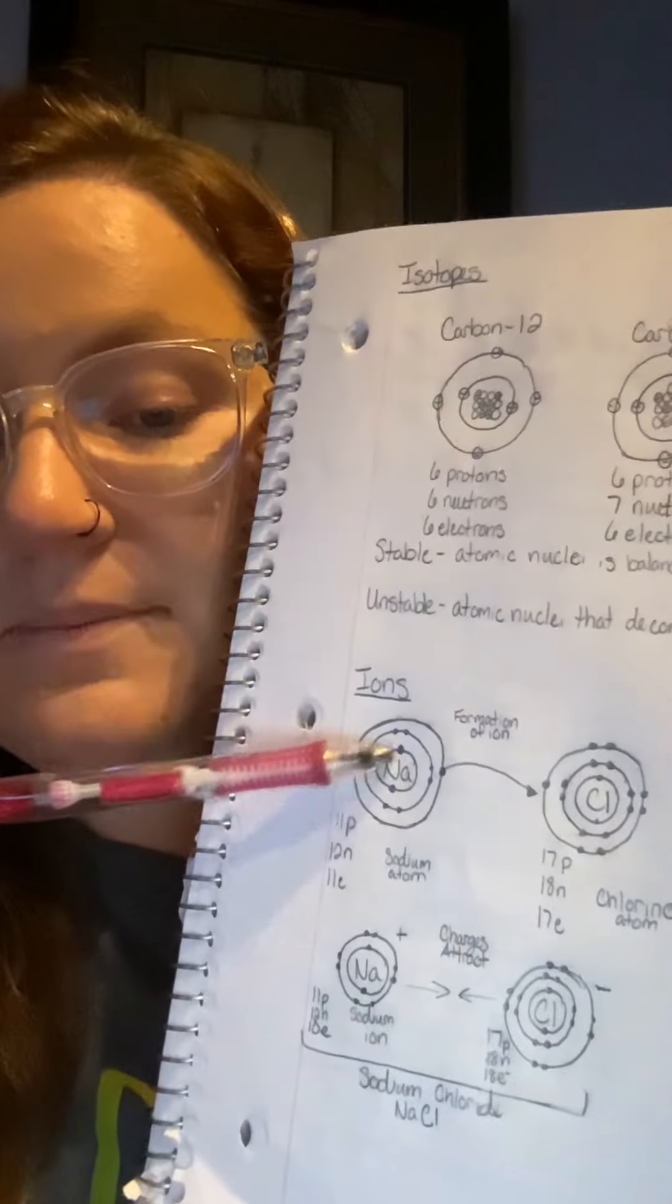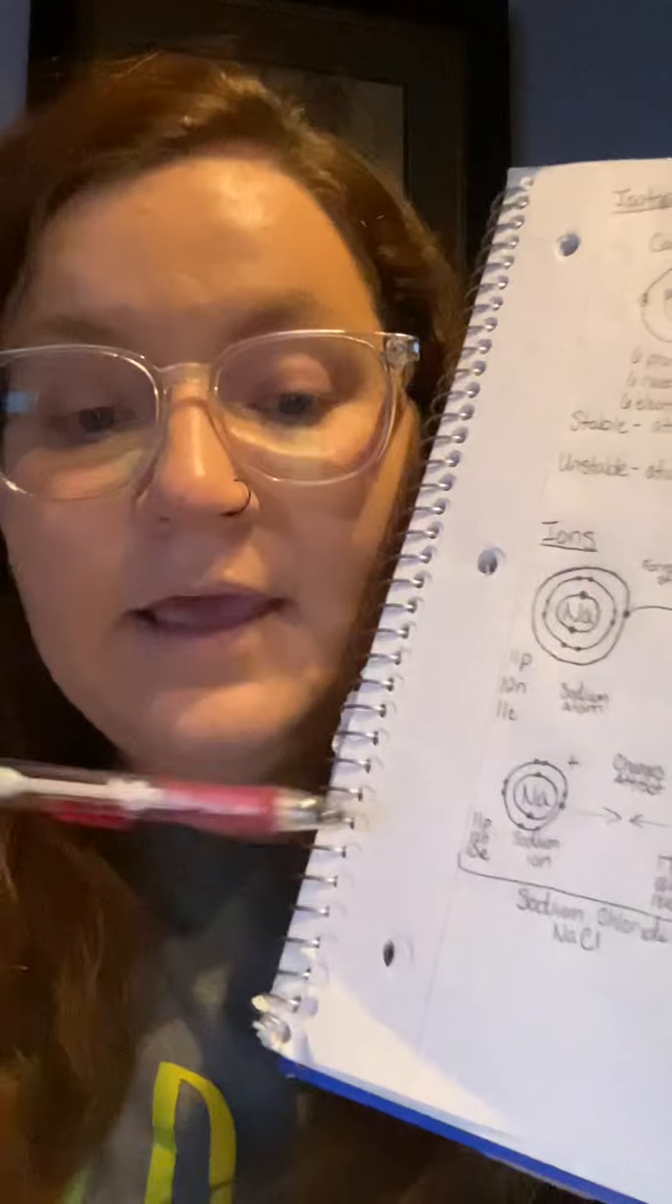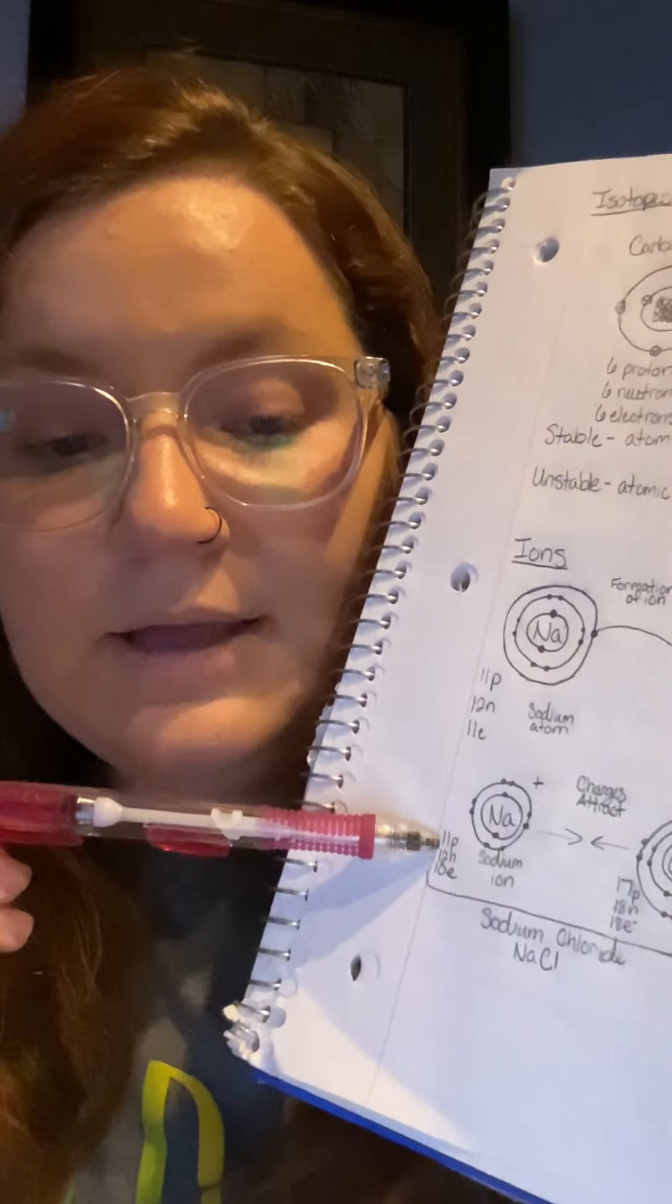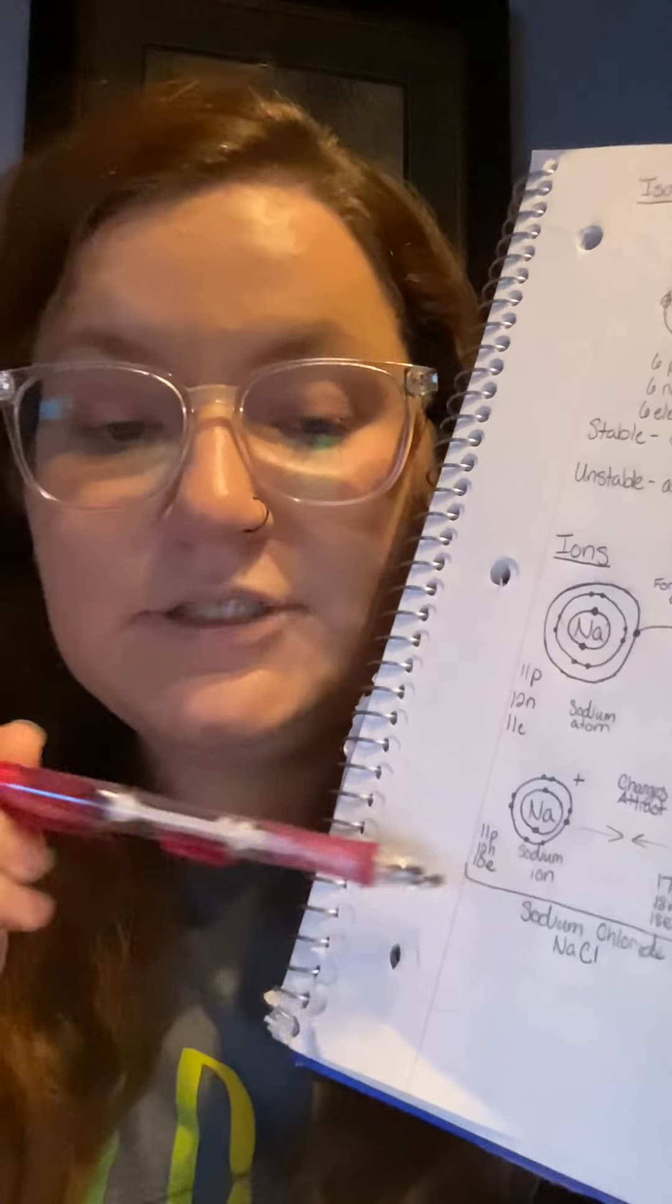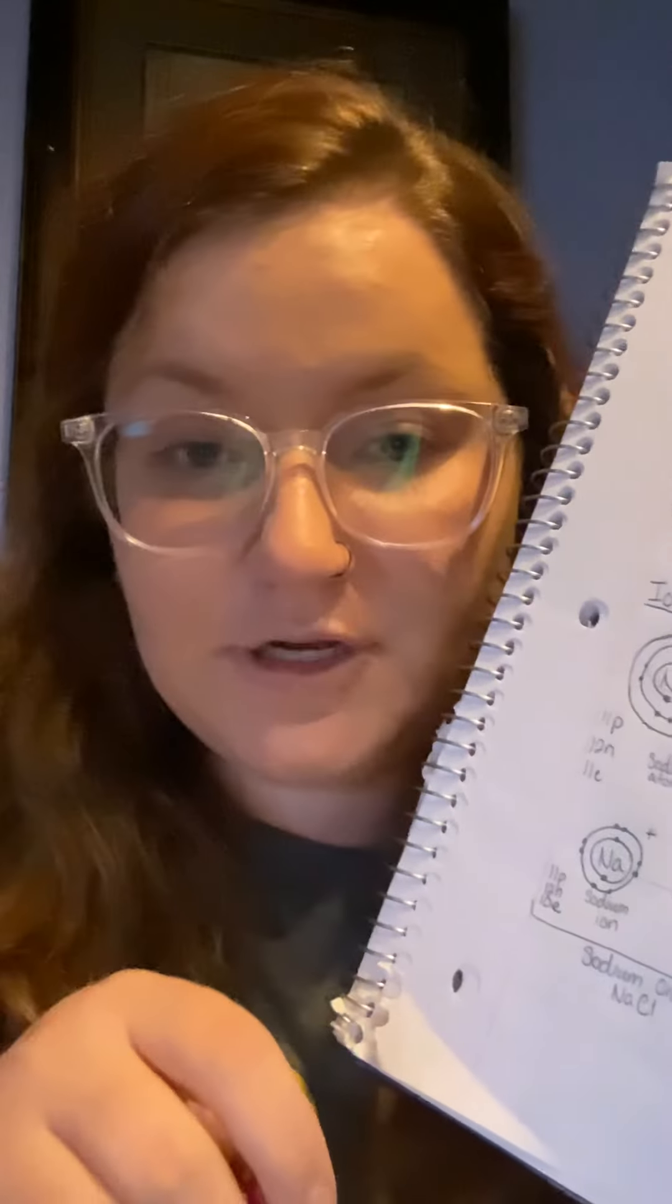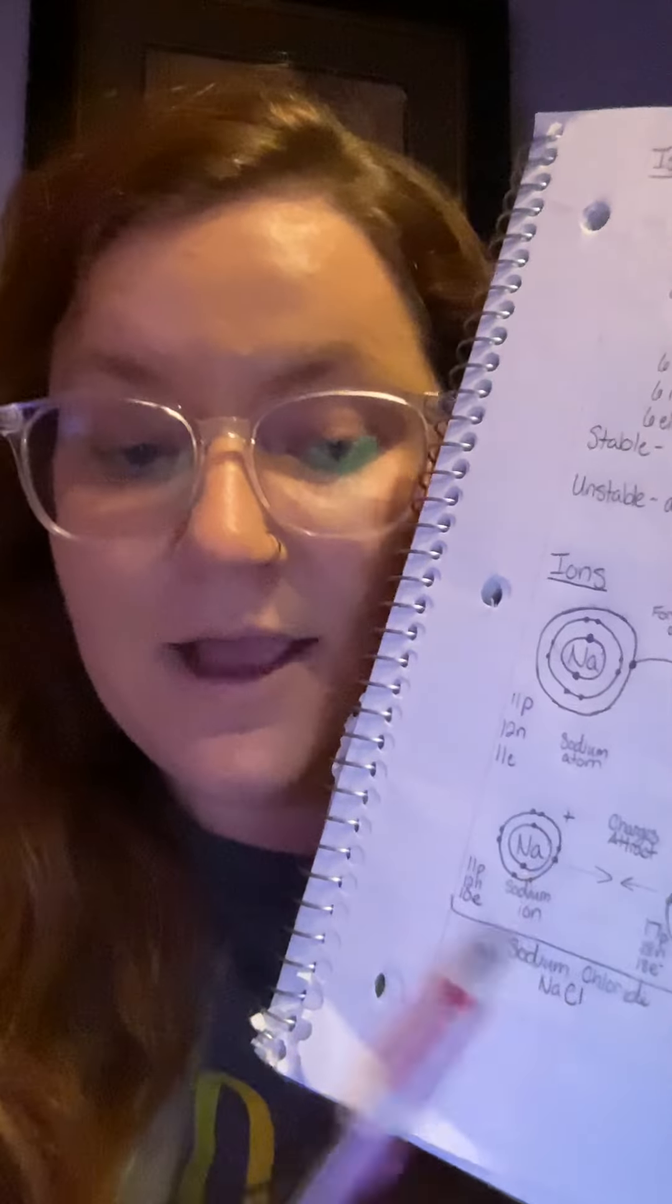Because sodium has given up an electron, given up a negative charge, they drop down to 11 protons, 12 neutrons, 10 electrons. By getting rid of an electron, you're now having a more positive charge to that ion.